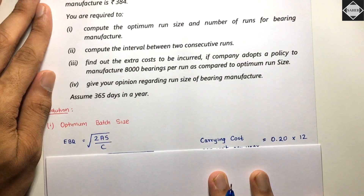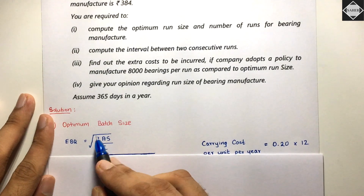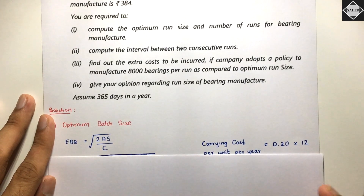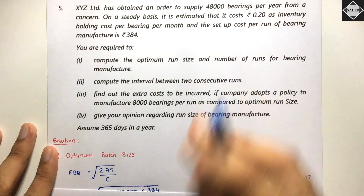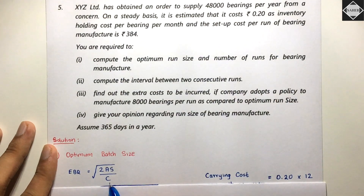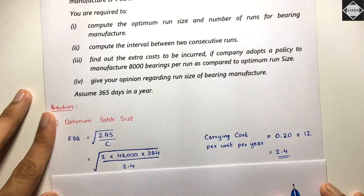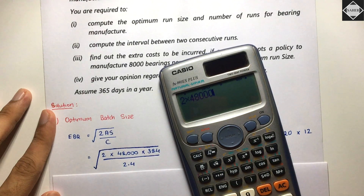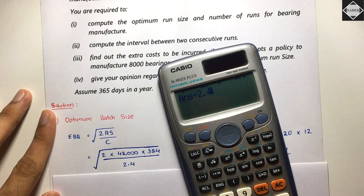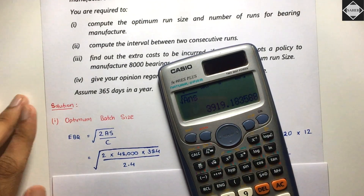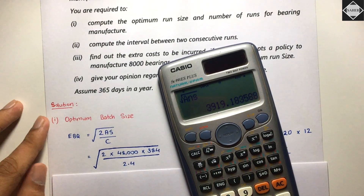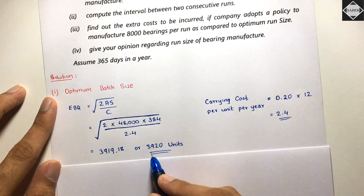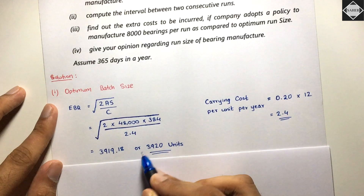Using the EBQ formula: √(2 × Annual Demand × Setup Cost ÷ Carrying Cost per unit per year). Substituting values: √(2 × 48,000 × 384 ÷ 2.4) = √(15,360,000) ≈ 3,919. Rounding off, the EBQ is 3,920 units. This is the most economic batch size.